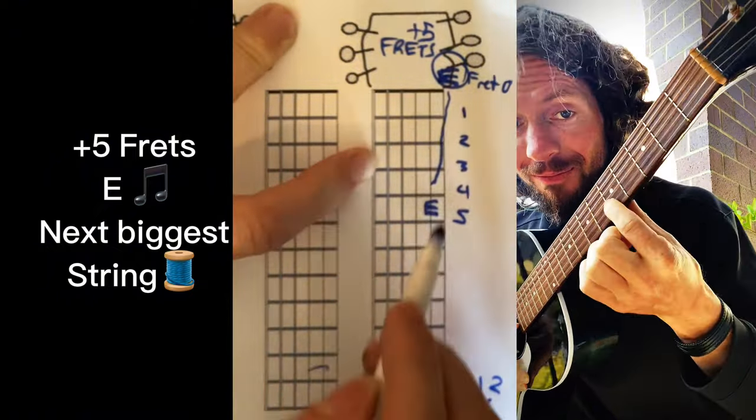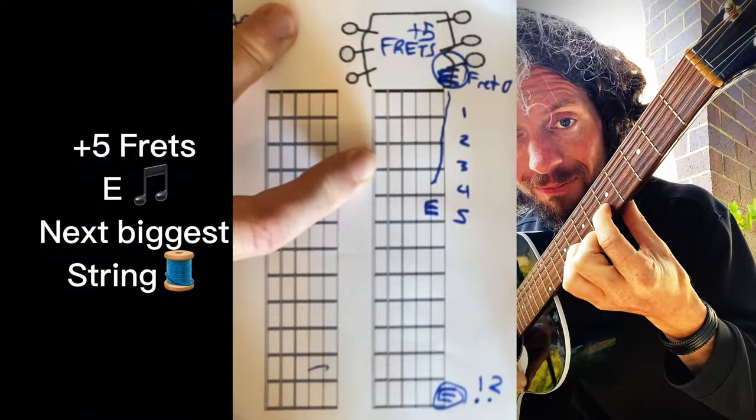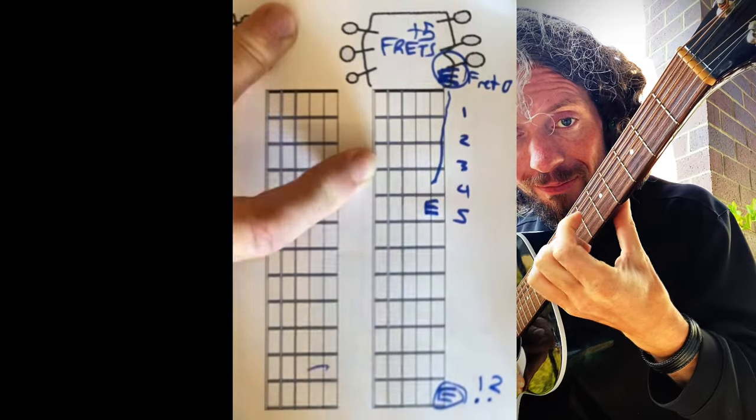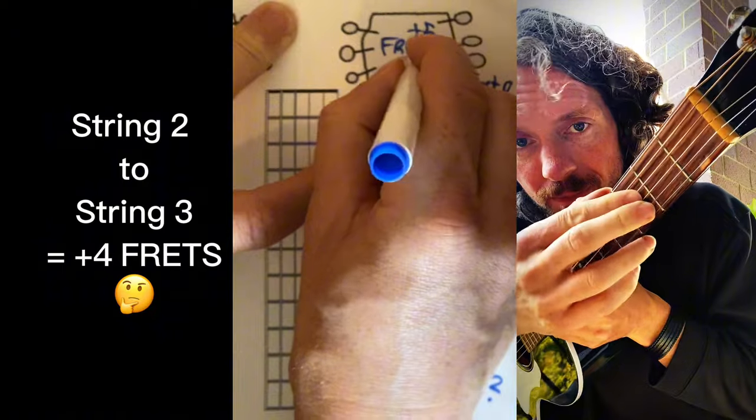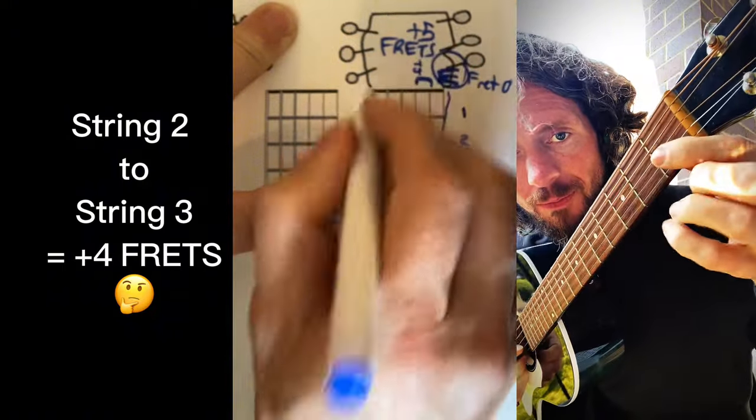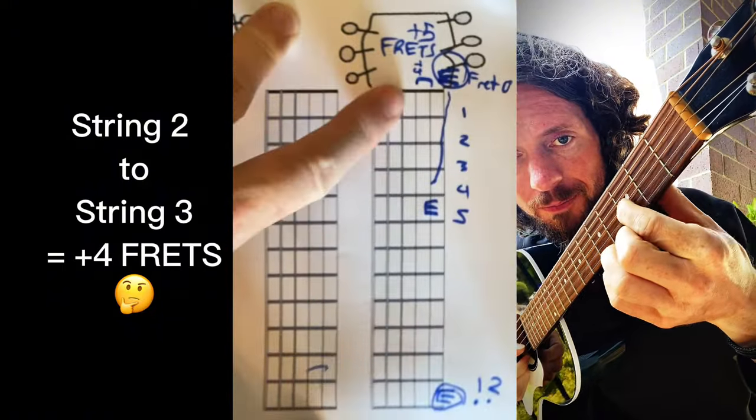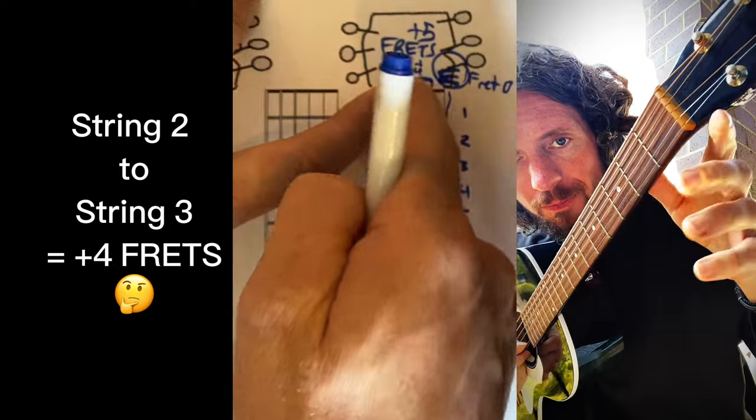Now the distance between these two strings is plus four. All the other ones are plus five. So check out the plus four distance from the second and third string.